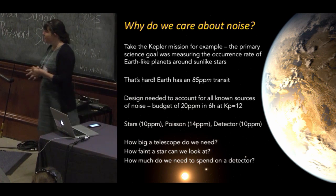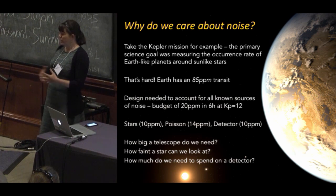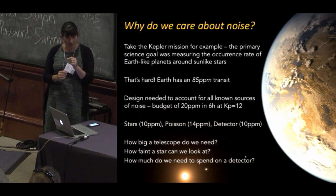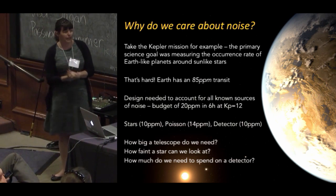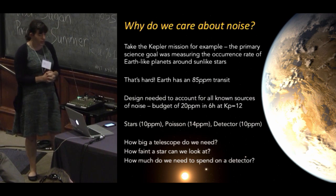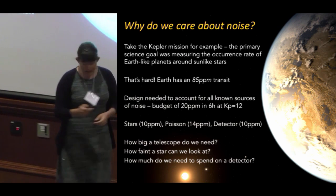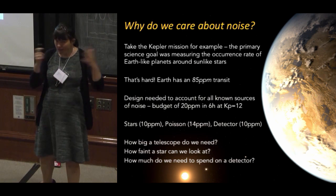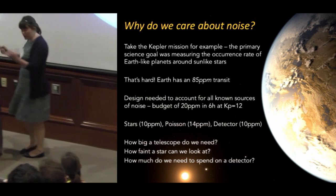I didn't want this to be a laundry list of every single thing that stands between you and a clean planet signal. The primary goal of Kepler was to determine the occurrence rate of Earth-like planets around sun-like stars. Earths are tiny and suns are huge, so a transit of an Earth-like planet is only 85 parts per million. The error budget that Kepler came up with was 20 parts per million in six hours on a 12-magnitude star, breaking down into three sources: noise from stars, shot noise, and noise from the detector. Summing these in quadrature gives 20 parts per million.